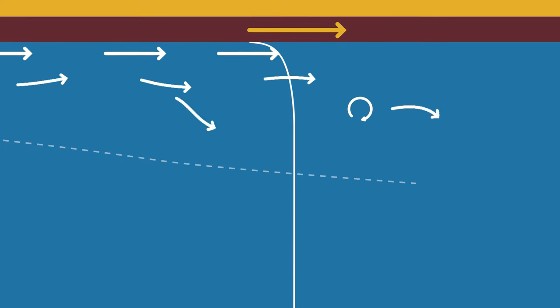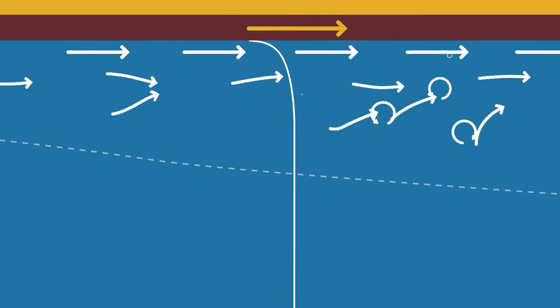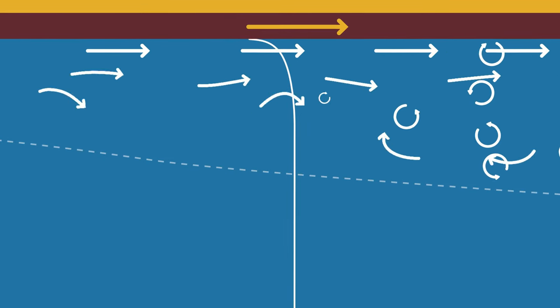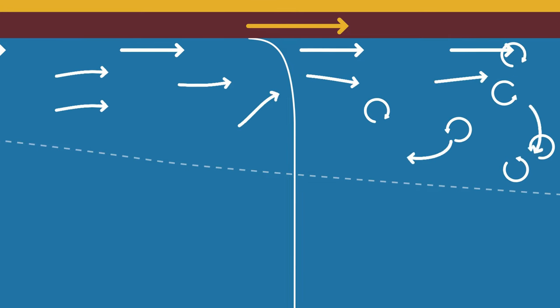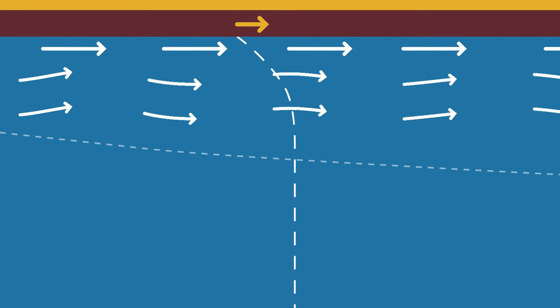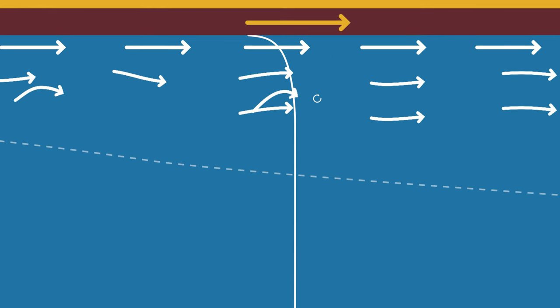But why is this chaotic swirling flow a problem in terms of flow losses? The answer is quite simple. For example, the chaotic swirling enhances the mixing of the fluid, and the mix of slower and faster fluid layers increases the mean velocity along the surface. So the changes become sharper here, and this will also increase the resistance, as we've seen before.